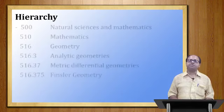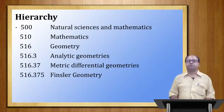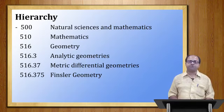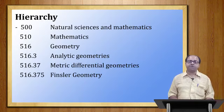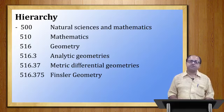Another example: 500 Natural Sciences and Mathematics; 510 Mathematics; 516 Geometry (more specific); 516.3 Analytic Geometries; 516.37 Metric Differential Geometry; 516.375 Finsler Geometry (even more specific). So Finsler Geometry is the subordinate class of Metric Differential Geometry, and Metric Differential Geometry is the superordinate class of Finsler Geometry.